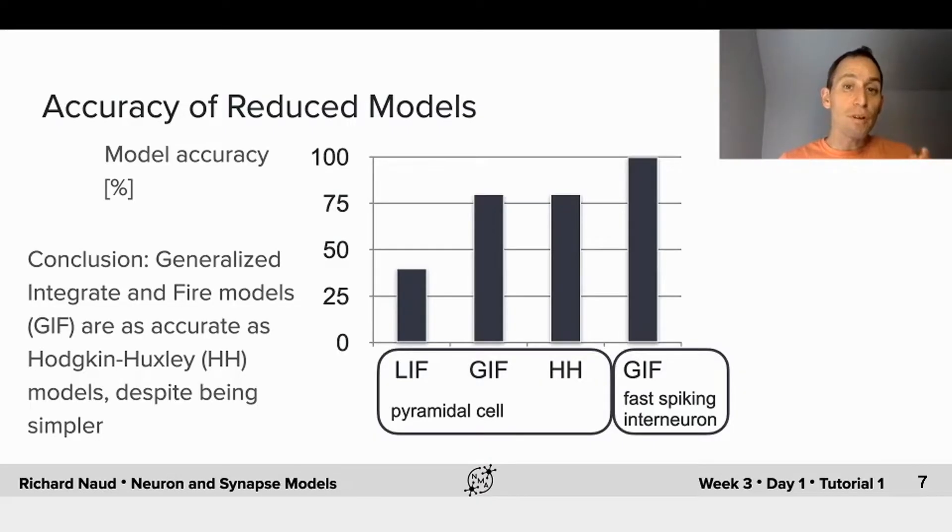Now, these results depend on the particular cell type that was used for doing that analysis. This was made on excitatory cells. So that is mostly, most of the cortex is made of those excitatory cells. If we look instead on the inhibitory cells, the generalized integrate-and-fire model is capturing 100% of the predictable spike times. So it's arguably the simplest model that has the highest accuracy for those cells.